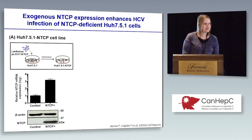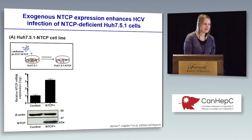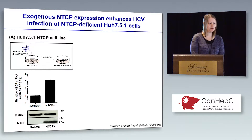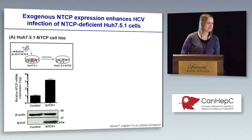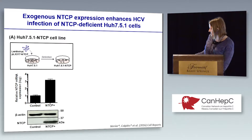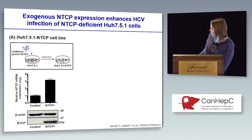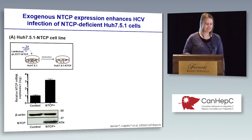To do so, we generated an NTCP-expressing hepatoma cell line using Huh7.5.1 cells. Normally these cells are deficient for NTCP expression, but we were able to exogenously introduce NTCP into these cells. We can see on both the mRNA level and the protein level that we do have expression of NTCP in these cells.